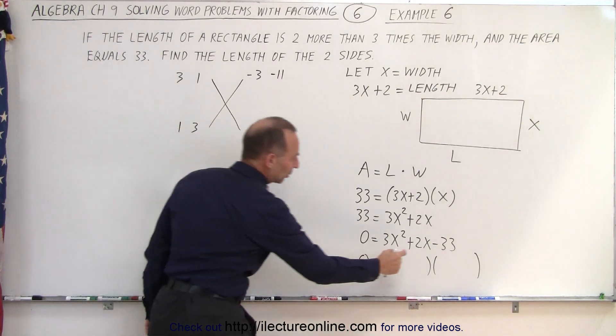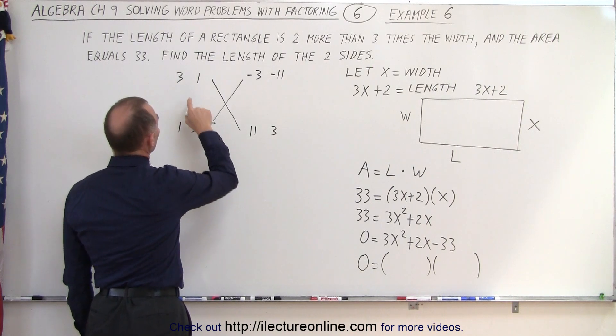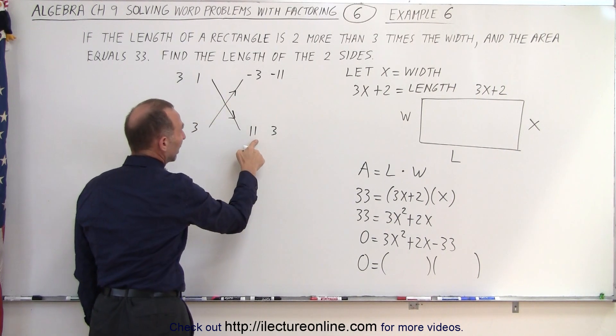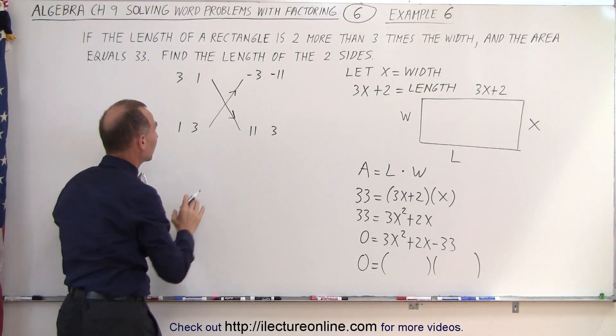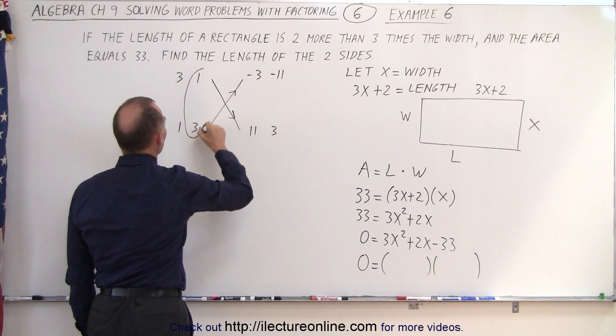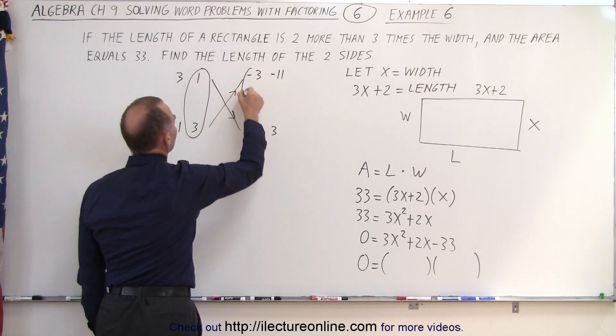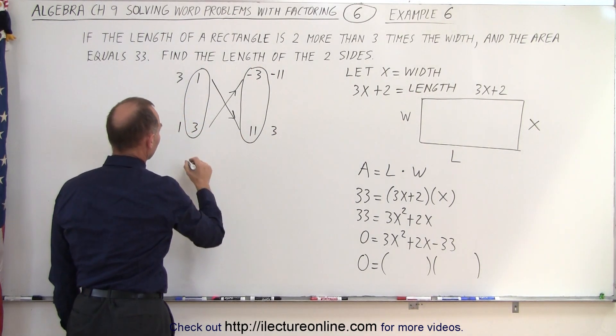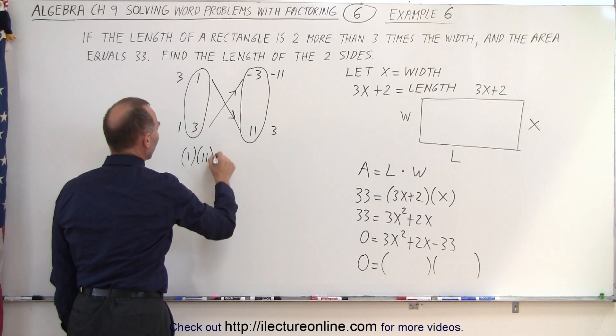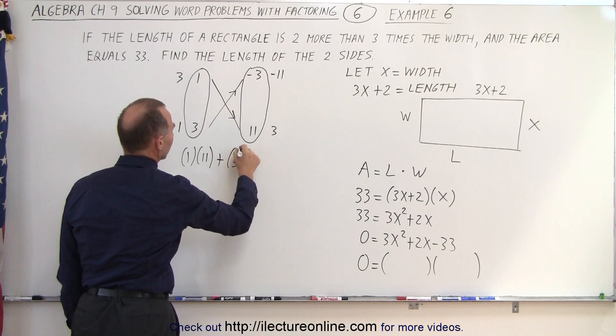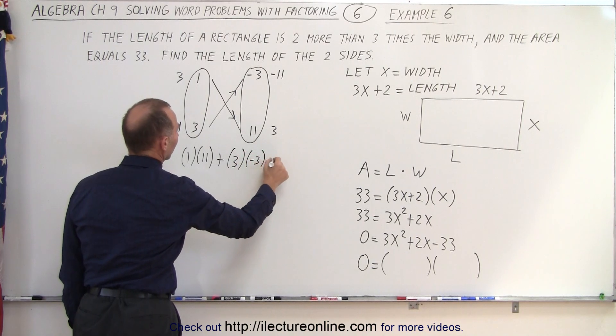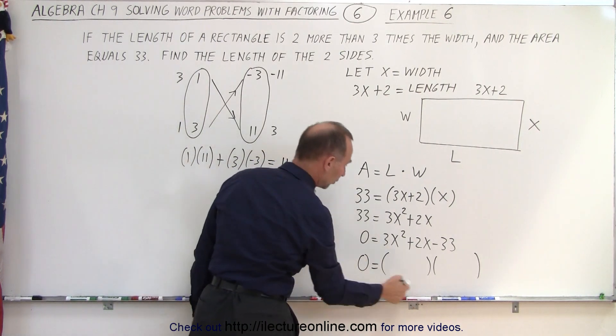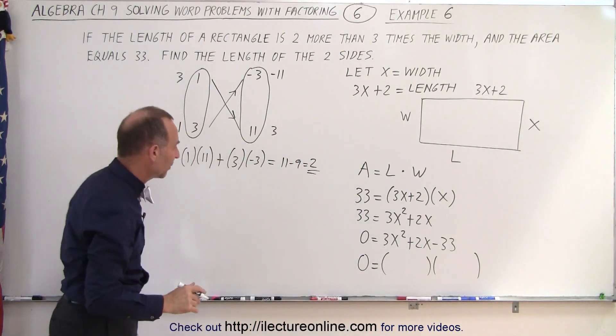Now, how do we get the middle term? The middle term is 2x. So, we can go three times eleven, but three times eleven already gives us 33. That's not likely going to give us the middle term. So, I think if we use a combination of these two and these two, we're most likely to get the correct middle term. Let's give it a try. So, one times eleven plus three times a negative three. Well, that adds up to eleven minus nine, which is equal to two, which is the middle term I'm looking for. The middle term is 2x right there. So, I got the right combination.